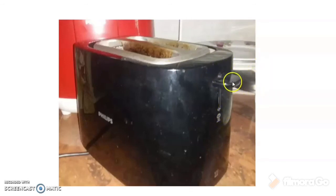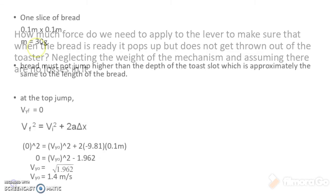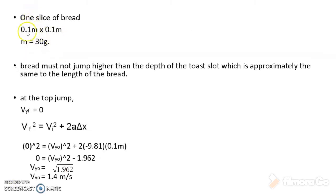When we pull the lever down, the bread is pulled downward between the heating elements inside the toaster, and the spring at each end of the toaster is extended. When the bread is ready, the spring is released and the bread pops up. The question is: how much force do we need to apply to the lever to make sure that when the bread is ready, it pops up but does not get thrown out of the toaster? We neglect the weight of the mechanism and assume no losses. A typical slice of bread has a length and width of 0.1 m and a mass of 30 g. For the bread not to be thrown out, it must not jump higher than the depth of the toaster slot, which is approximately equal to the length of the bread.